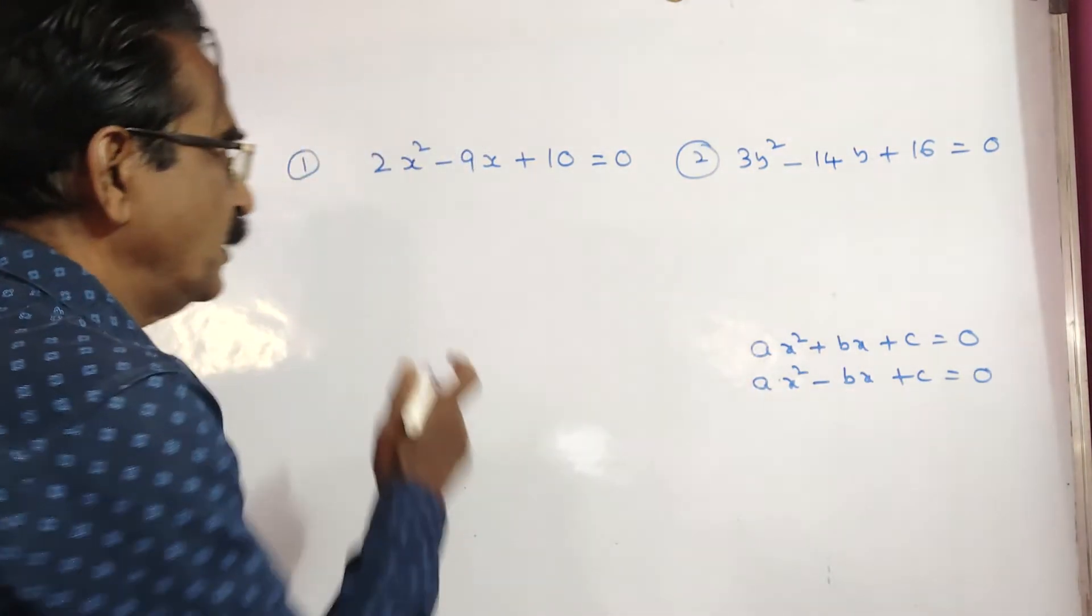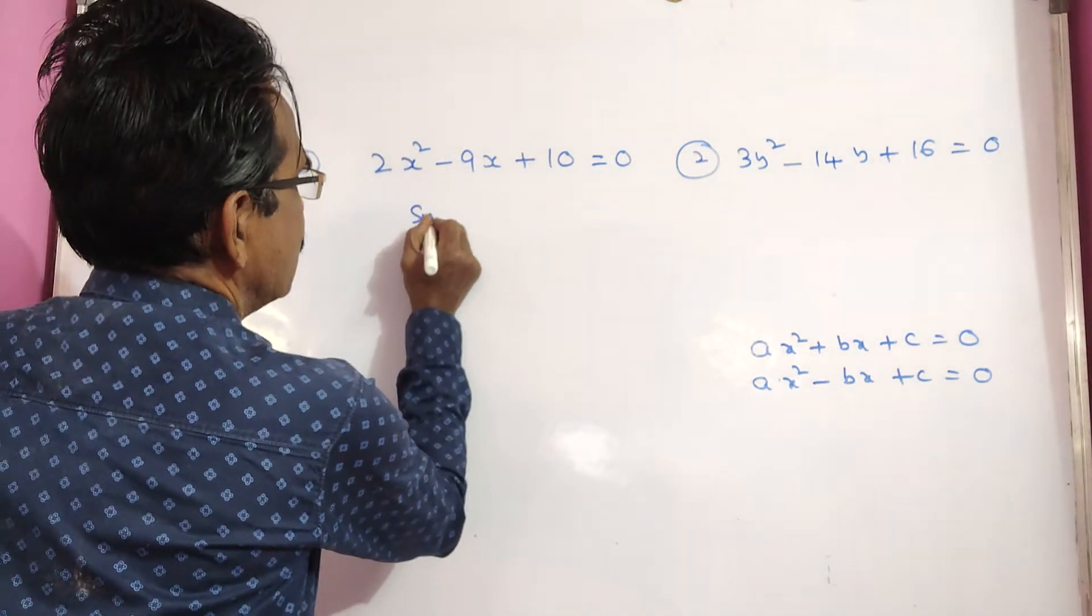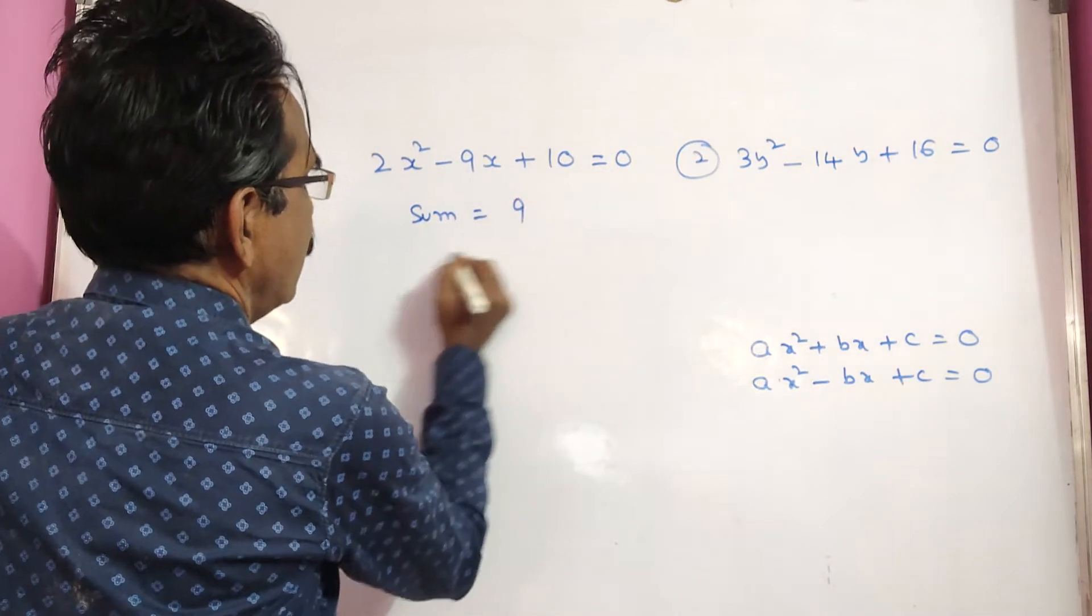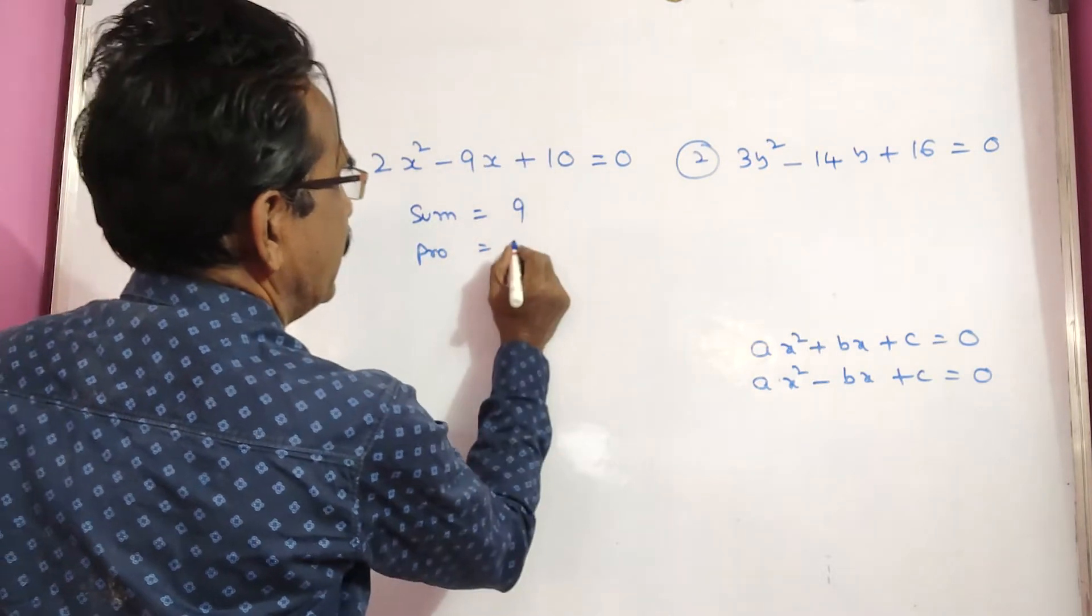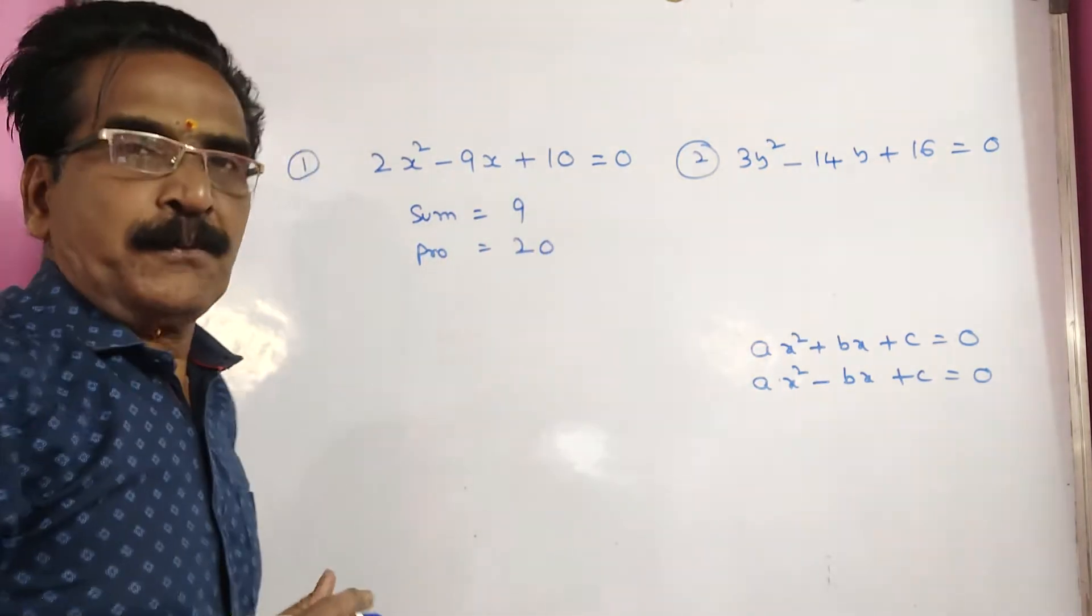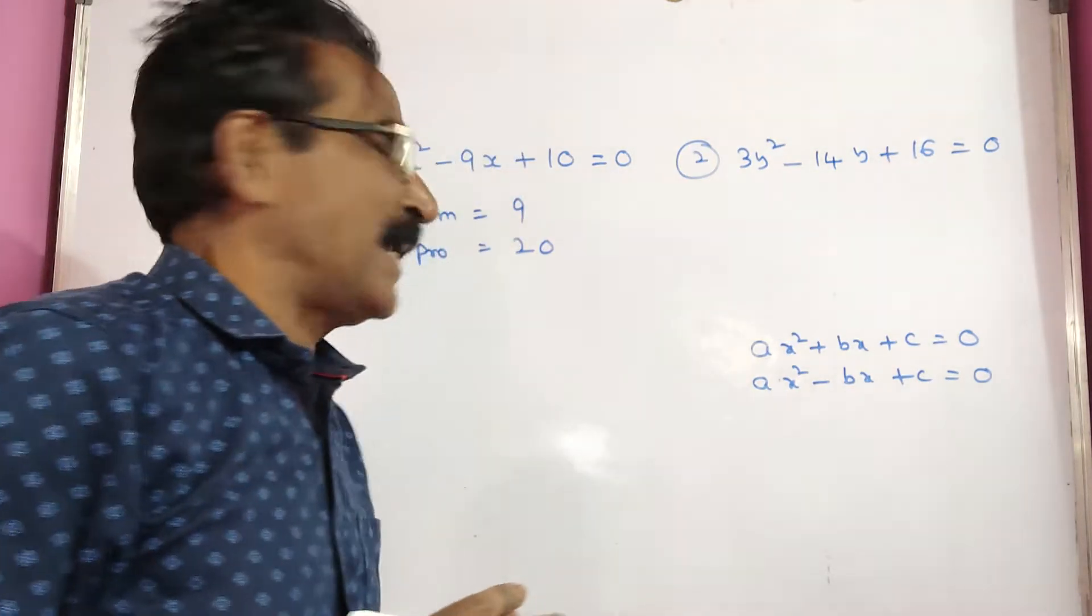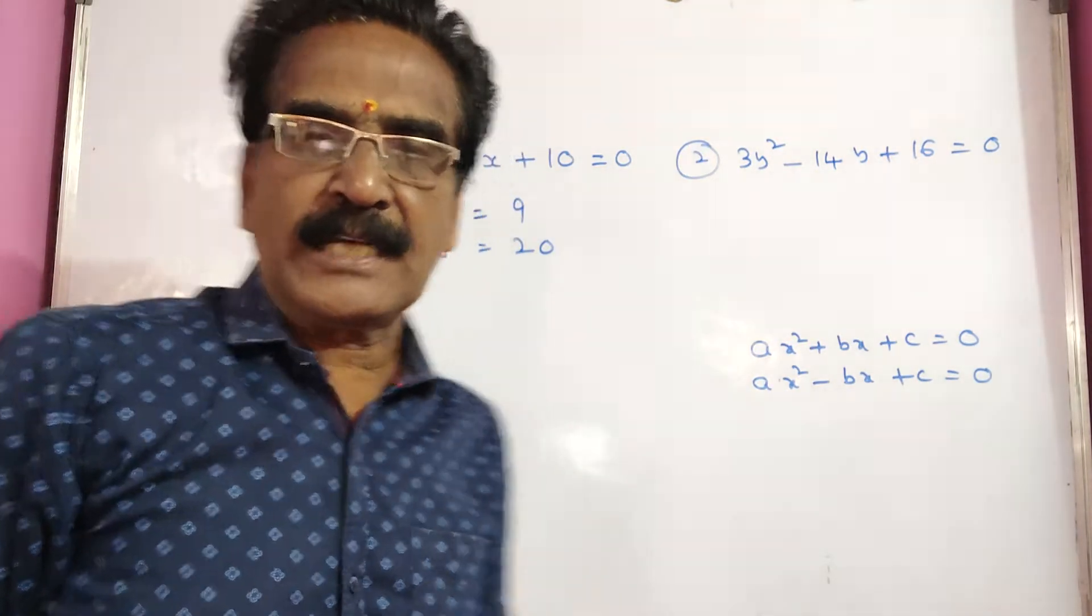Then sum of the roots is 9 and product must be 2 into 10, 20. So product 20, sum 9. Simple thing, 4, 5s are 20.